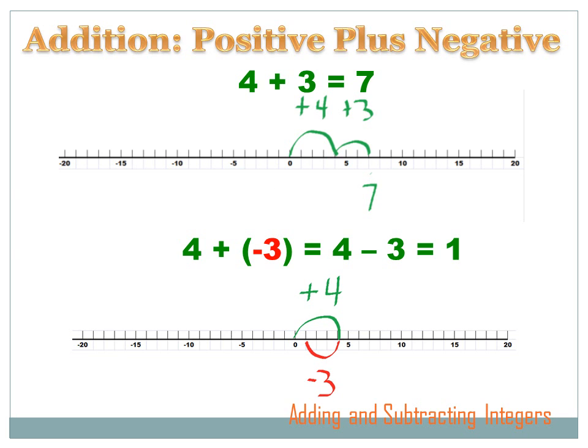We've used number lines to explain addition of positive and negative numbers. You move to the right with a positive number, and to the left with a negative number. Looking at four plus three on the number line: I start at zero and go four to the right because it's a positive number. Then we're adding, which means go to the right, and adding a positive three means go to the right again. So four, plus one, two, three, and I end up at seven.